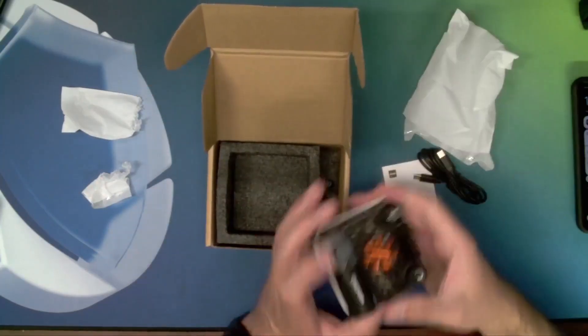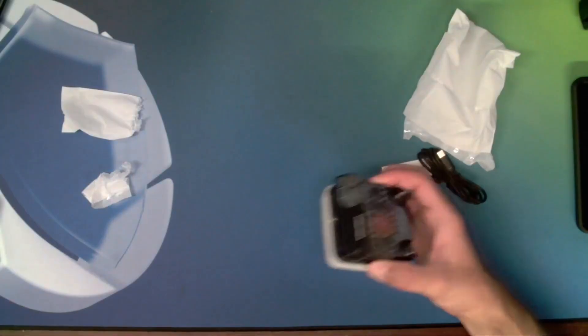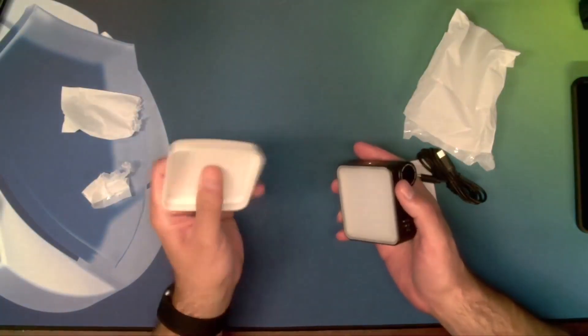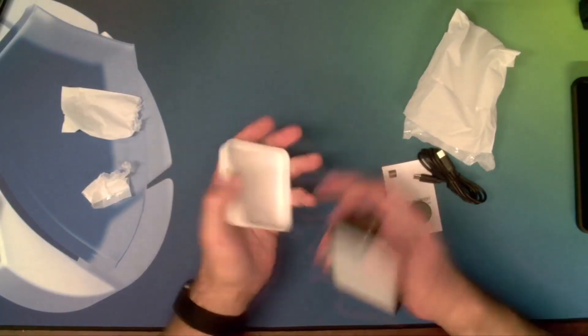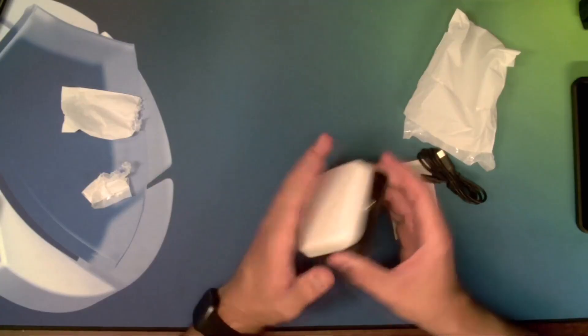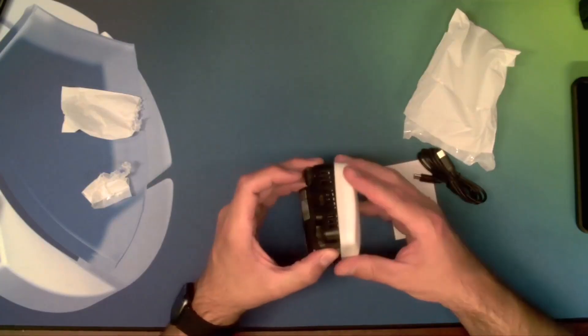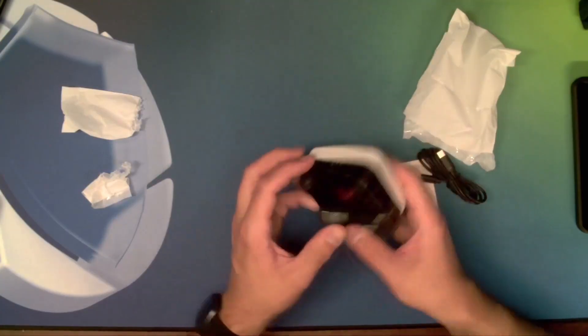The last item in the box is the Cinepure light itself. It has a softbox-like silicone piece sitting on top. It's not on there super well, but it is there.